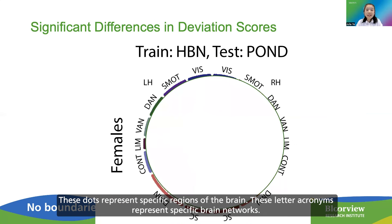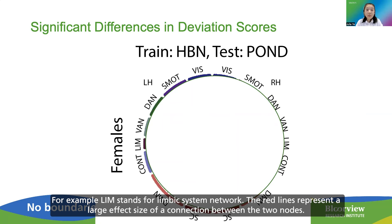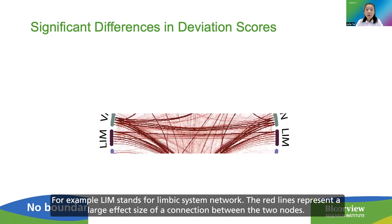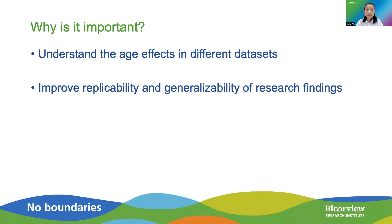These dots represent specific regions of the brain. The letter acronyms represent specific brain networks. For example, LIM stands for limbic system network. The red lines represent a large effect size of a connection between the two nodes.